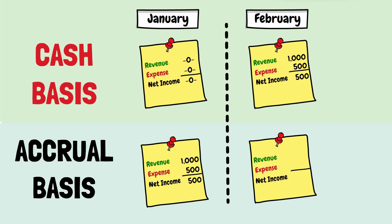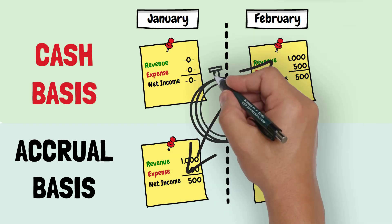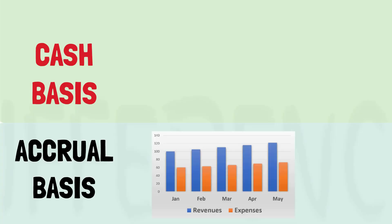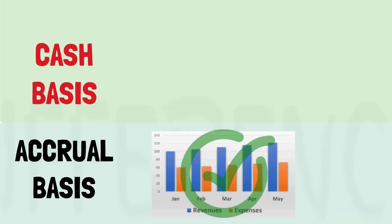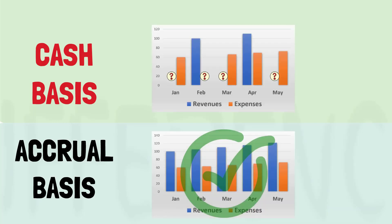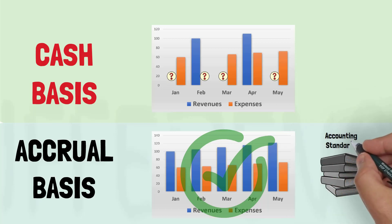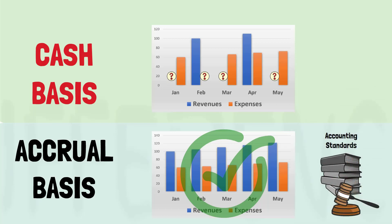As you can see, the key difference between the cash basis and the accrual basis of accounting is the timing of when the transactions are recognized. The accrual basis of accounting provides a more accurate picture of a company's financial performance, since it takes into account all transactions, not just those that involve cash as is the case with the cash basis of accounting. That is why accounting standards require businesses to use the accrual basis of accounting in financial statements.